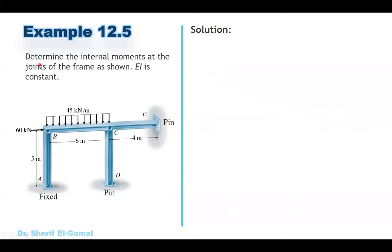In this example, we are asked to determine the internal moments at the joints of the frame where EI is constant. We have a fixed support at A, a pin support at D, and at E we have four members: AB, BC, CE, and CD with dimensions of 5, 6, and 4 meters. The loading includes a uniform load on BC of 45 kN/m and a horizontal force of 60 kN at B.